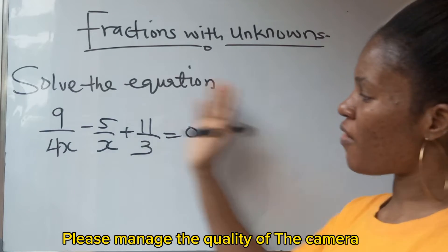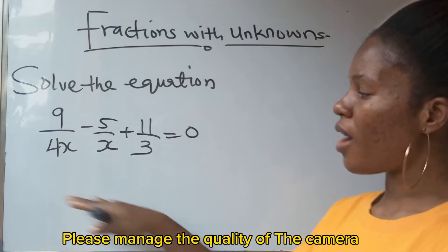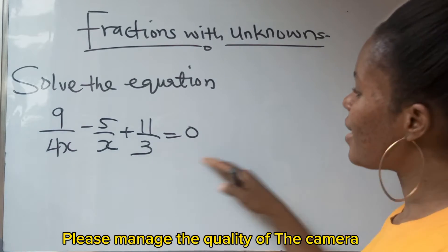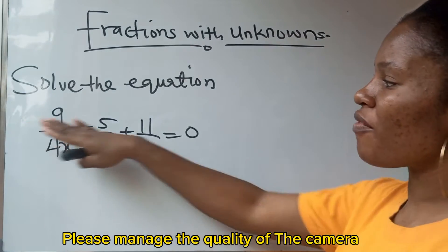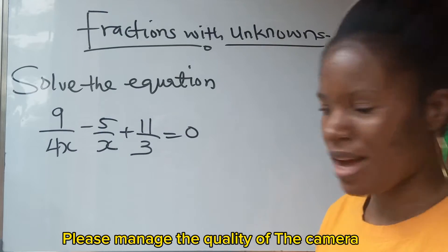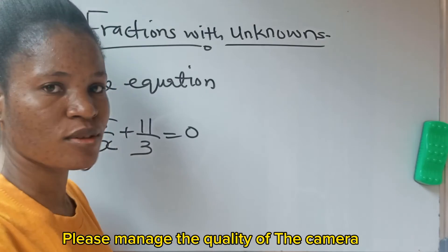Now, these are fractions with unknowns at the denominator. When you are faced with something like this, what do you do first? You clear this denominator so that you have a linear equation. The question remains, how do we do that? Follow me. Let me show you how to go about this.